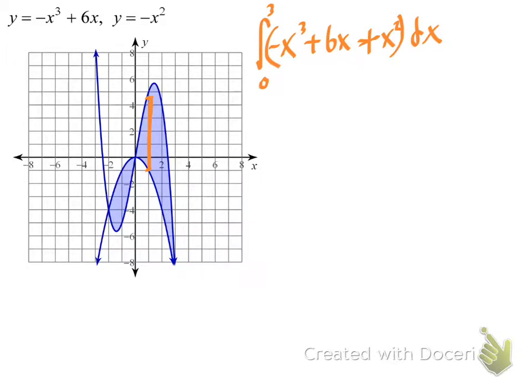There's the height and the width. Ready to integrate. In descending order, that's going to be -¼x⁴ + ⅓x³ + 3x².